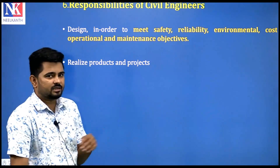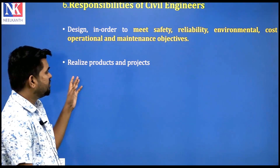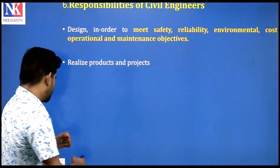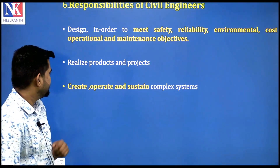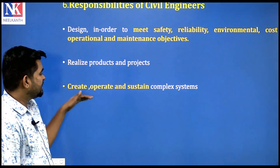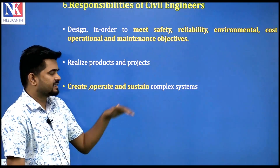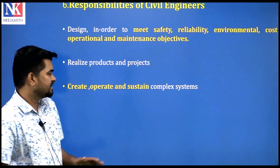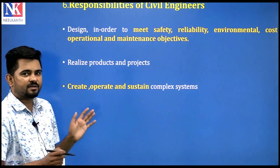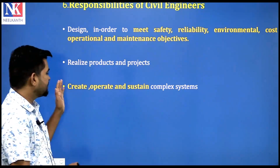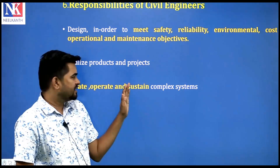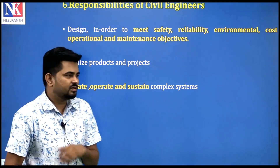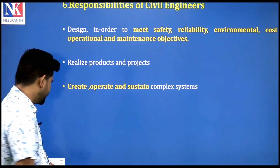Civil engineers must realize both product and project, and both have the responsibility of civil engineering. Next is to create, operate and sustain — a civil engineer is a person who creates, operates and sustains a project or system, which is a complex system.